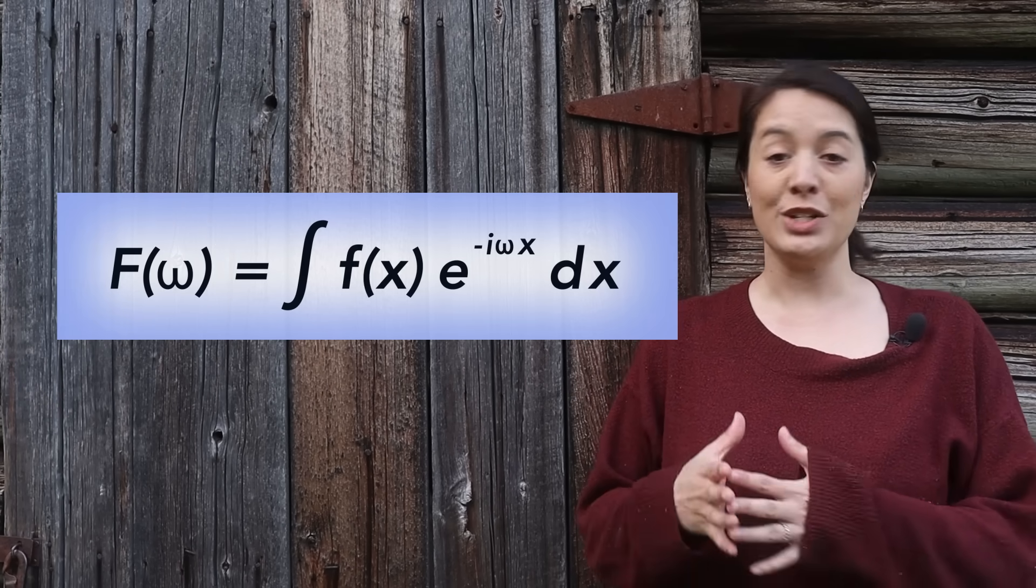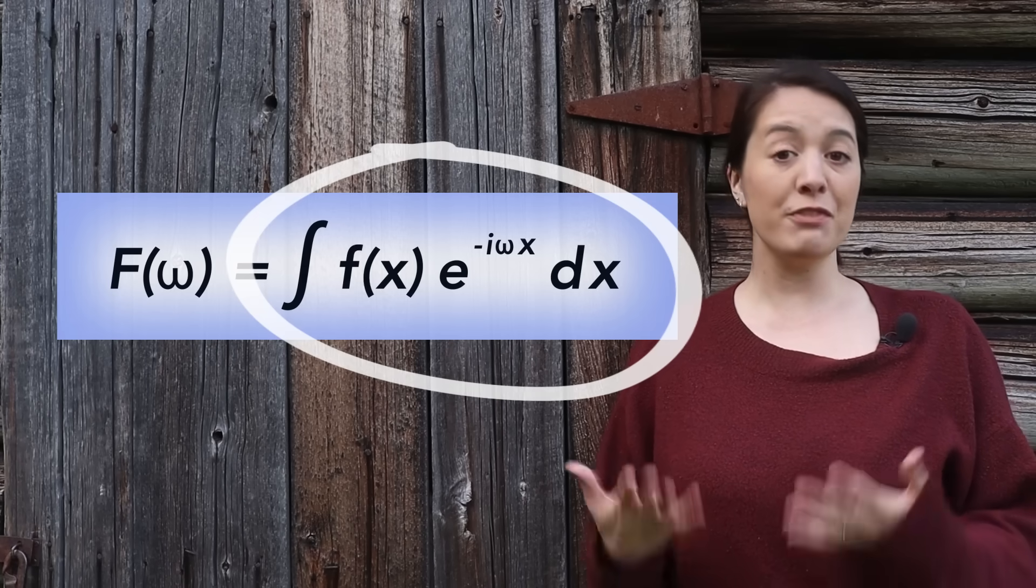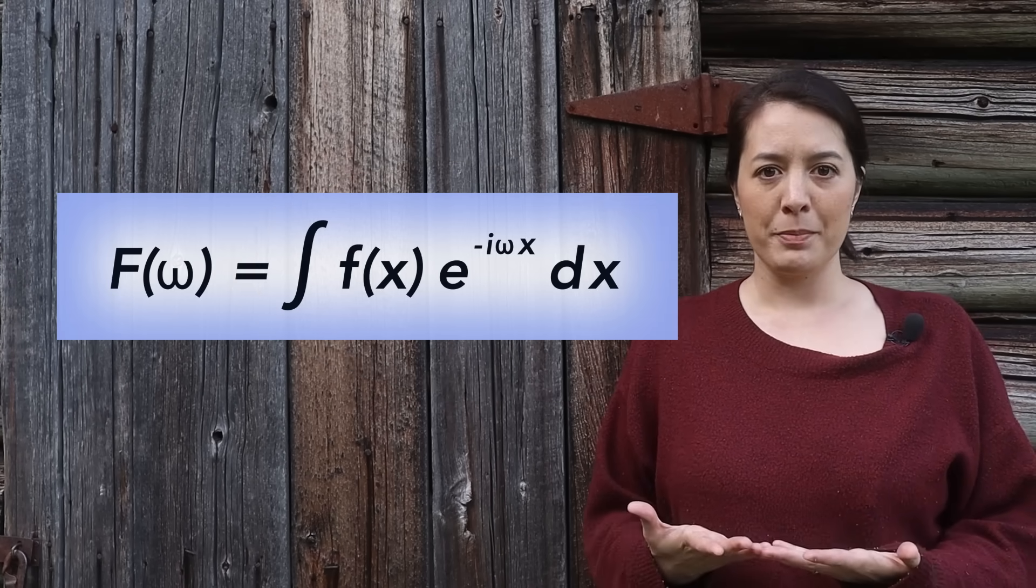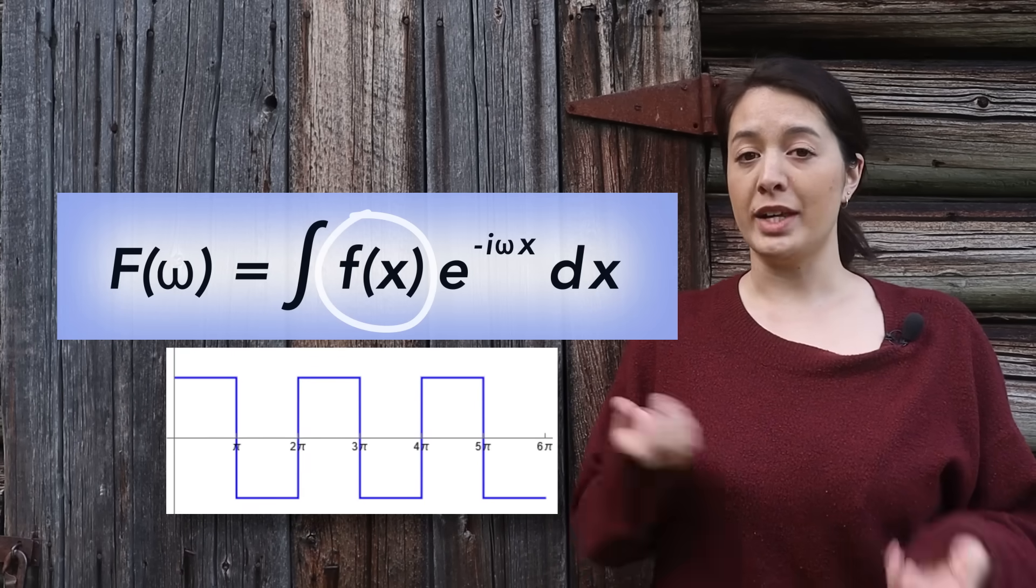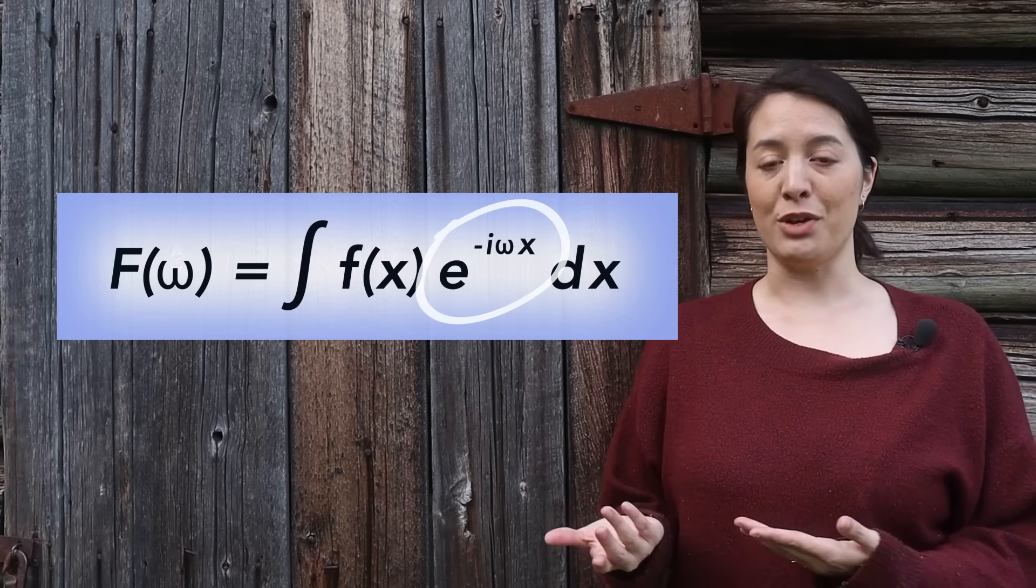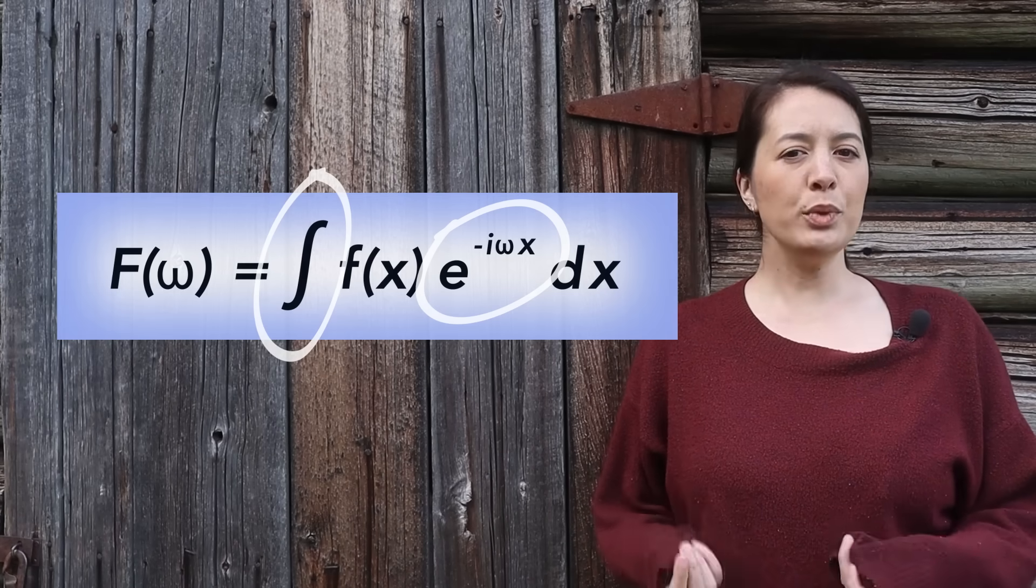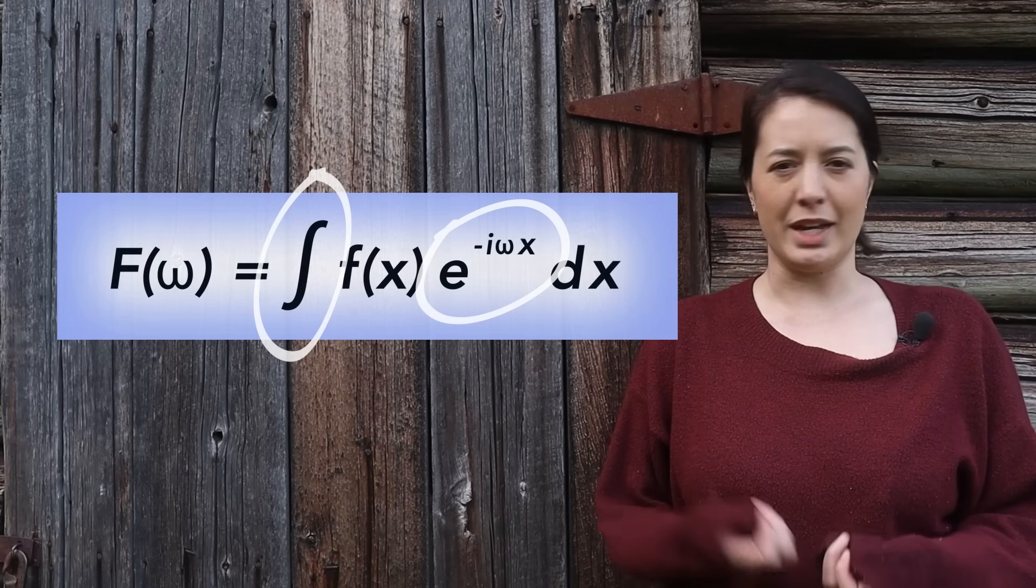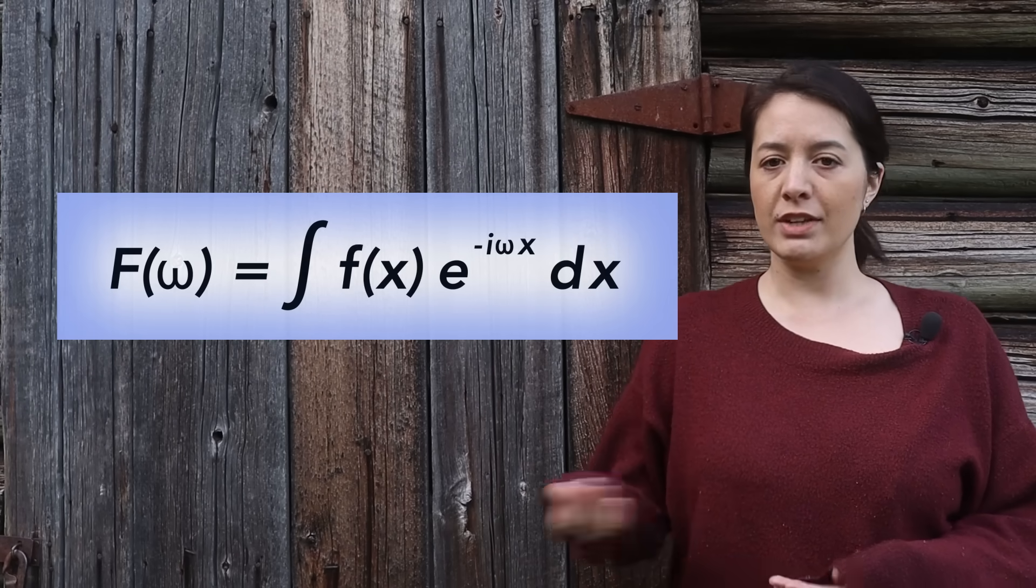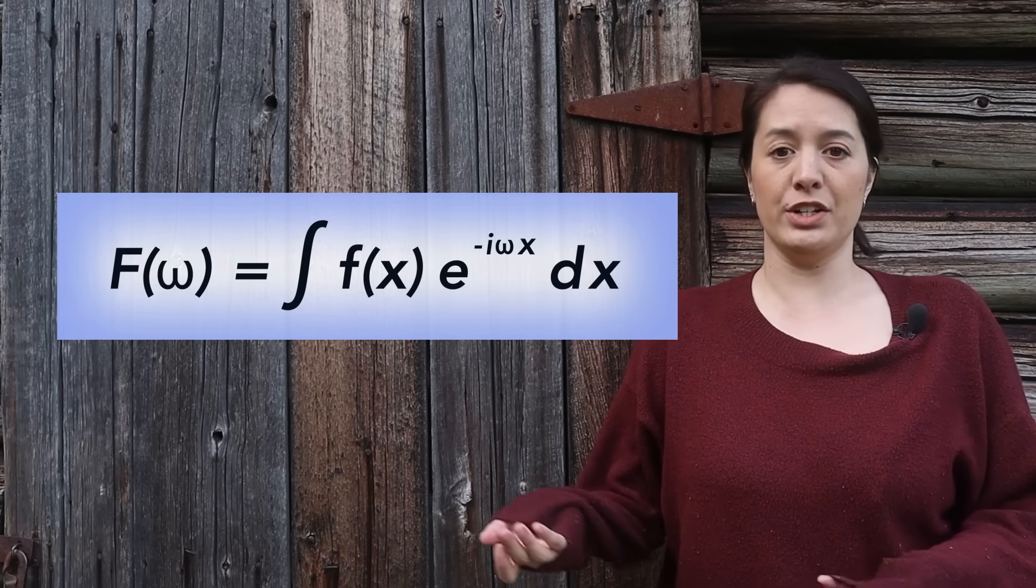So basically, if we do all of this stuff, we can figure out the Fourier series. So what is all of this stuff? f(x) is the time function we're calculating the Fourier series for. Then we have this exponential term and an integral. Why would multiplying the time function by an exponential term and taking the integral of that result give us the sine and cosine waves that that function is made of?